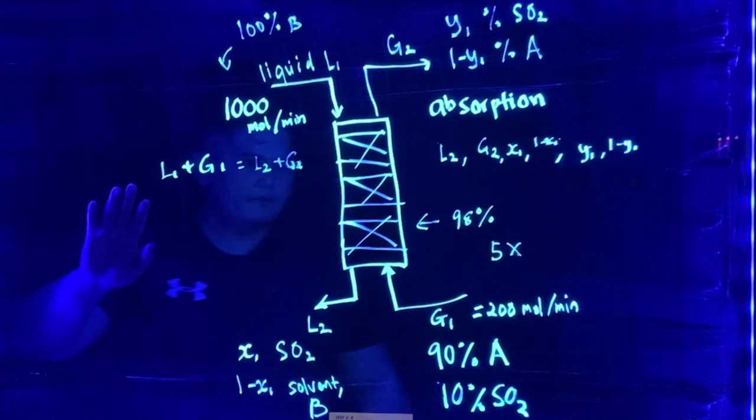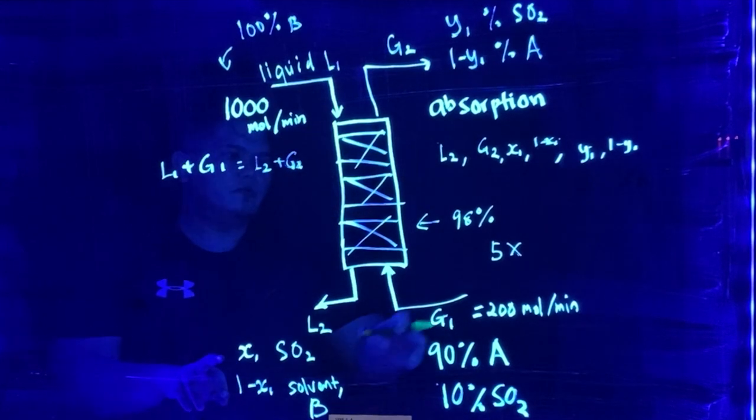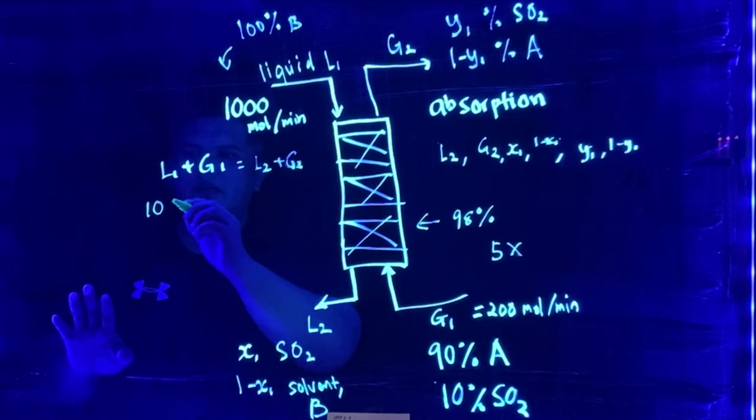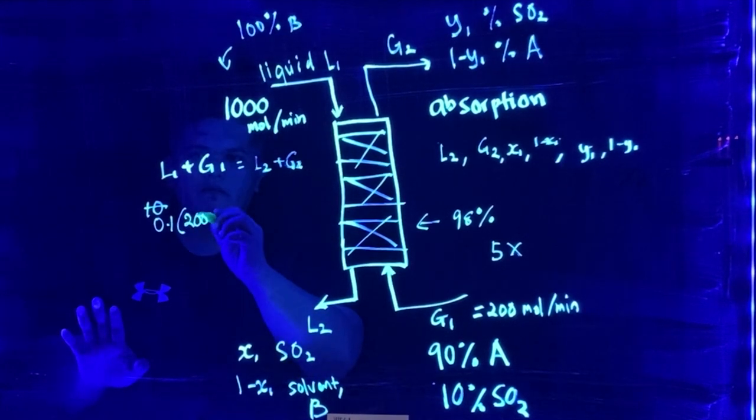And then what are the equation that we should have? So let's say we talk about the SO2 balance. So what is coming in from SO2 here? 10%, which is 0.1 multiply with 200, equals to some amount which has been absorbed by the liquid here.